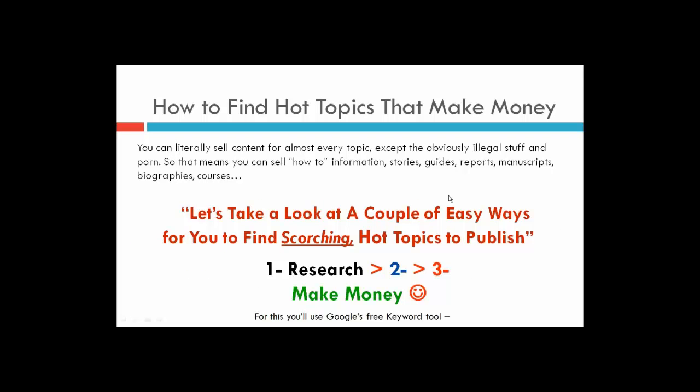Step number one of the three-step system is Research. We want to make sure that we find topics that make money. You can literally sell content on almost any topic, except obviously illegal stuff.